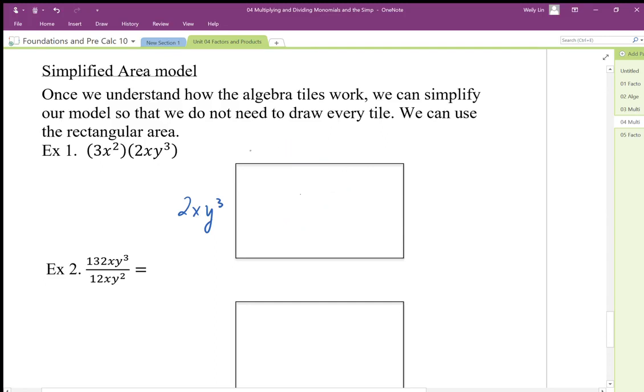If I want to show each individual piece of this, I can do a length of x², x², x² to give me my 3x². I can say that I have xy³, xy³, and I could show my six area pieces of x³y³ like this. We can simplify this a little bit.